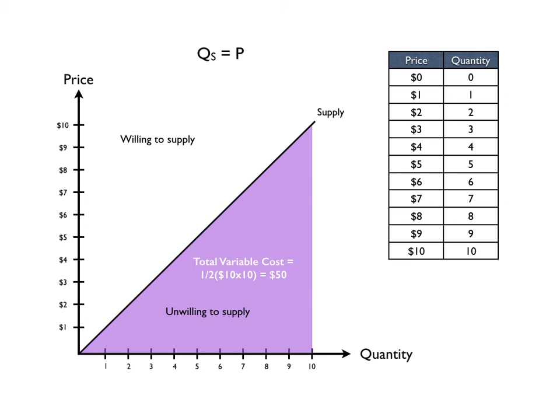It's unwilling to supply anything within the purple area because it's not able to cover its variable cost at a price that's in that purple area.